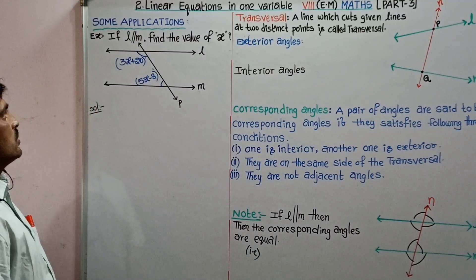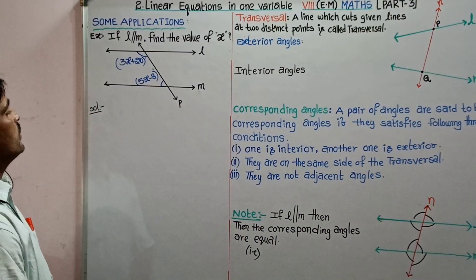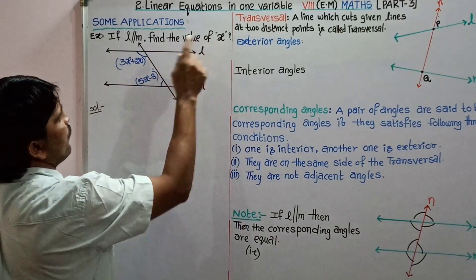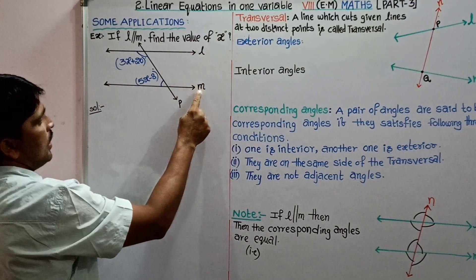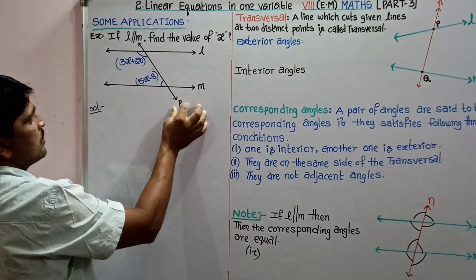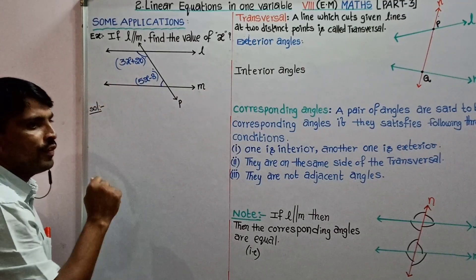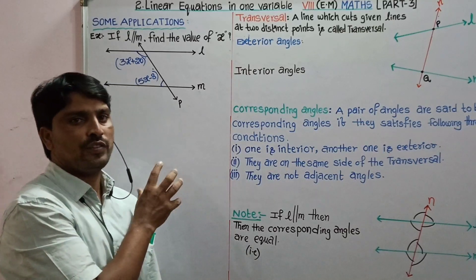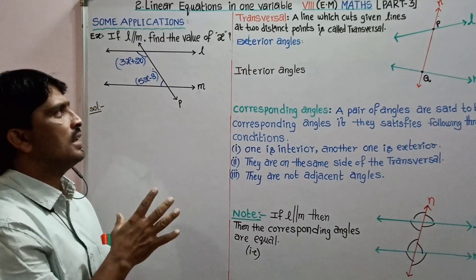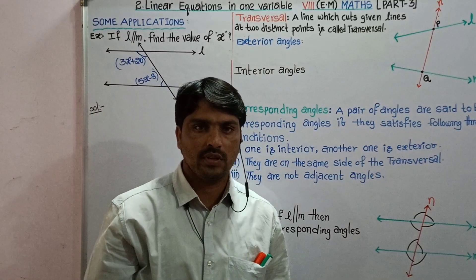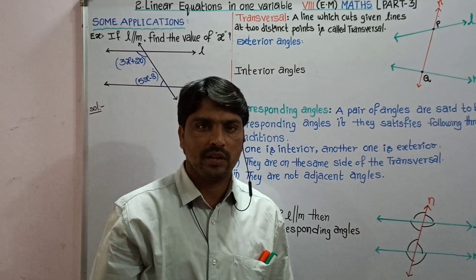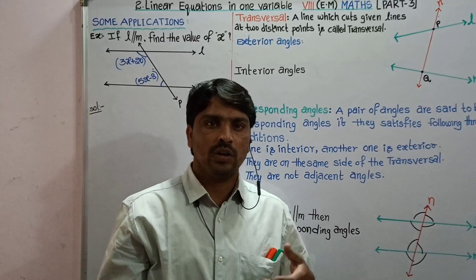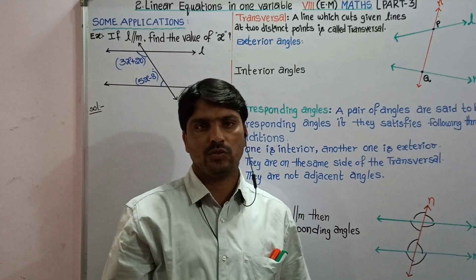Some applications — example question: if L is parallel to M, find the value of x. Line L is parallel to M and P is a transversal, then we have to find the value of x. Before going to see the solution of this example problem, let us recall what a transversal is, the angles made by the transversal with two lines, what are interior, exterior, and what are the names of pairs of angles.